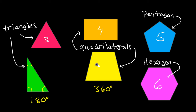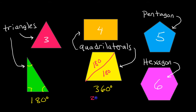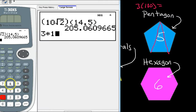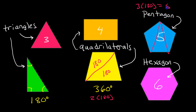There's a connection there that is useful to understand: a quadrilateral can be split up into two triangles. Each triangle was 180 degrees, so this 360 came from doing two times 180 degrees. You can keep going like that. If I take a pentagon, I can split a pentagon into three triangles. So that's going to be three times 180 degrees — that's 540 degrees for a pentagon.